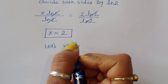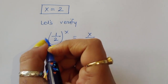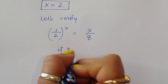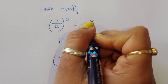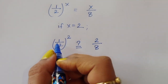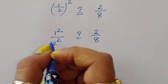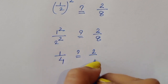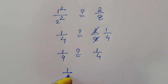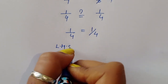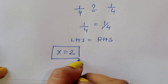Let's verify: the question is 1 upon 2 power x equals x upon 8. For x equals 2: left side is 1 upon 2 power 2 equals 1 upon 4. Right side is 2 upon 8 equals 1 upon 4. Since LHS equals RHS, the value of x equals 2 is correct.